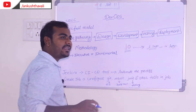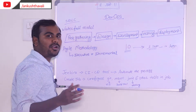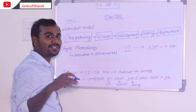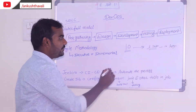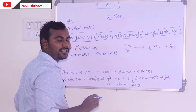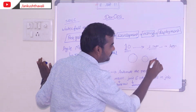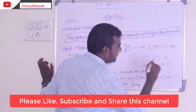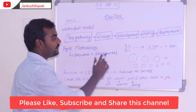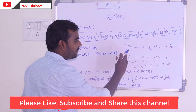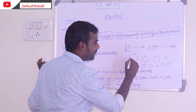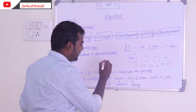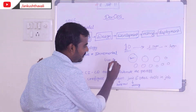If the client is not satisfied with the product delivered, you need to come back and make all the changes to the code, which is not practical. Instead, what you can do is divide those 10 features into 10 sprints — Sprint 1, Sprint 2, all the way to Sprint 10. For example, Sprint 1 could be just the login page, where the user enters their user ID and password and gets logged in to the dashboard.